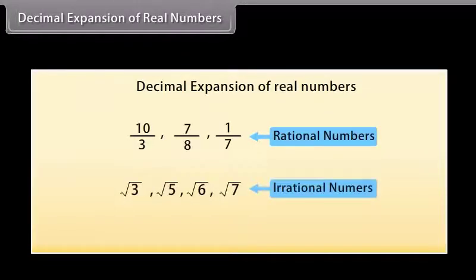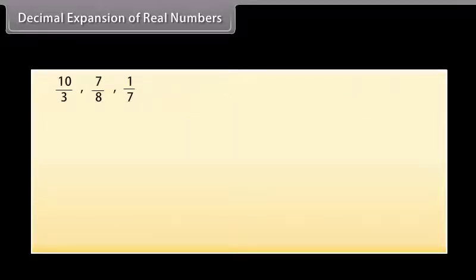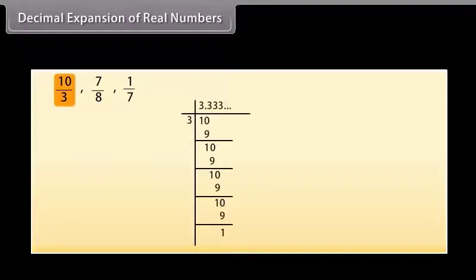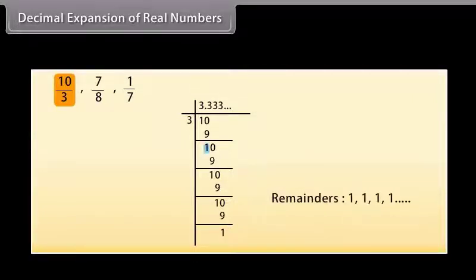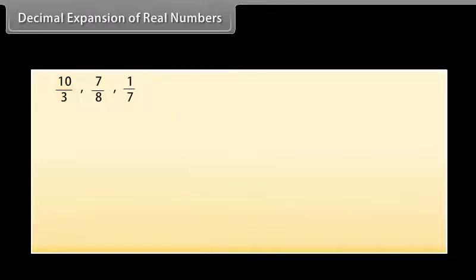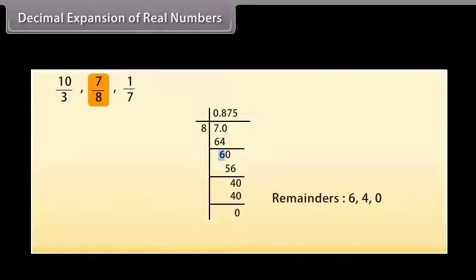Decimal expansion of real numbers. We have learned about real numbers. Now we will look at their decimal expansion. By this expansion, we can distinguish between rationals and irrationals. Let us first take rational numbers. We will find the decimal expansion of three numbers. The decimal expansion of 10 by 3 gives remainder 1, 1, 1, 1, 1. The decimal expansion of 7 by 8 gives remainder 6, 4, 0.